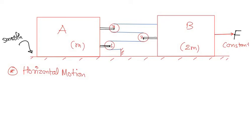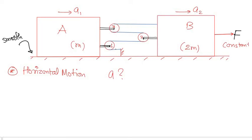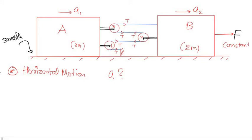In this problem there are two blocks A and B of mass m and 2m, three pulleys (pulley 1, 2, and 3), a single string running through all of them, and a constant force F applied on block B which lies on a smooth horizontal surface. All segments of the single string have the same tension T.